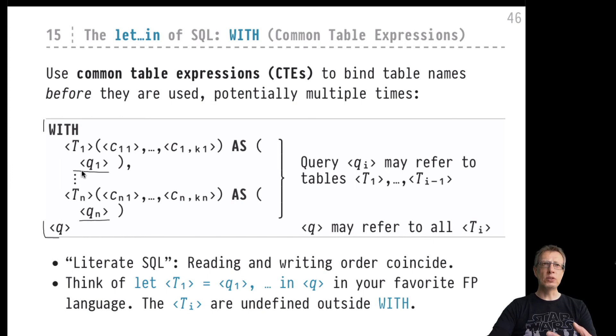It's really literate SQL. We can read from top to bottom, and it makes sense to comprehend the query in this particular fashion. It's really like a let-in construct in your favorite programming language—it's really local bindings. The T1 to Tn are not visible, are not in scope outside the entire Common Table Expression, outside this WITH construct. This will be very helpful. This is a godsend for the formulation of advanced SQL queries.